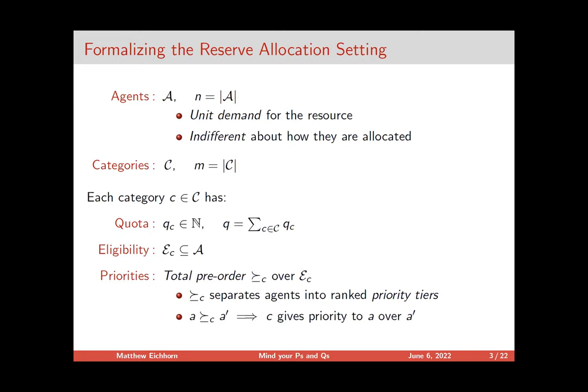To formalize the setting, we have our agents — these are the people who need care. We assume each of them has unit demand for the resource: they only need one, and they're indifferent about where they get it from. So maybe they're members of multiple populations, and as long as they get the resource, they're happy. This could be a little concerning in other settings — like education, where different scholarships or different ways of being admitted can have stigma attached — so it might be more consequential there.